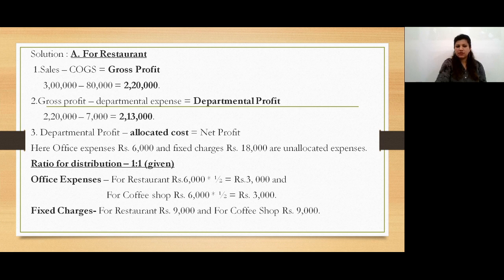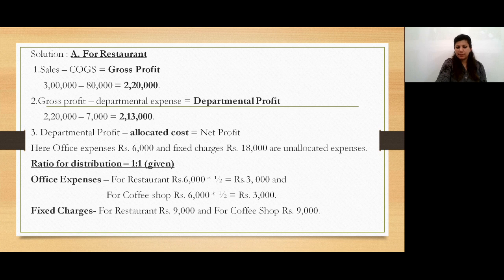Now we have to allocate the indirect costs — office expenses and fixed charges. The ratio for distribution is 1:1, so we divide office expenses of 6,000 as: 6,000 × 1/2 = 3,000 for restaurant, and similarly 3,000 for coffee shop. For example, if the ratio were 1:3, we would calculate it as 6,000 × 1/4.